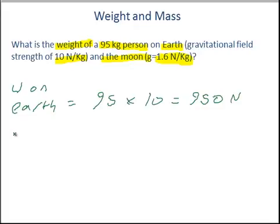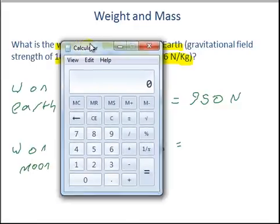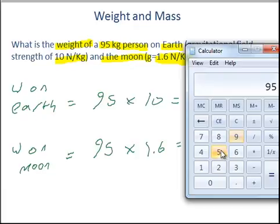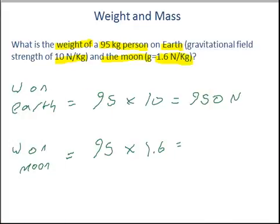And then the weight on the moon equals, so he's still 95 kilograms of mass because that doesn't change, and we're timesing it by the gravitational field strength which is 1.6. This is a bit harder to do in the head, so you get your calculator out and do the calculation. 95 times by 1.6 equals 152.